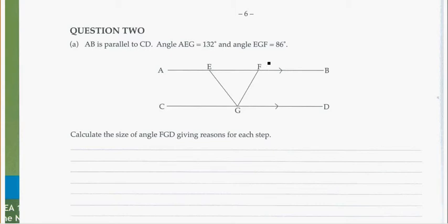Carrying on. Question 2 on the geometry P-book. This is Exam 1, PEA1. We're taking a look at our angle rules and our line rules. We see two parallel lines, indicated because they tell you, but also because of the little arrows — that means they're parallel.